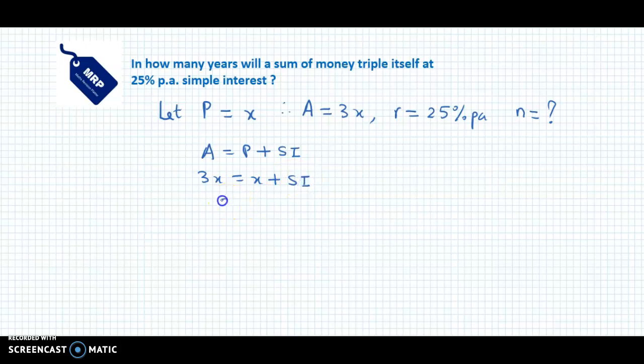So the simple interest is 2x. Now we use the formula for simple interest. We know that simple interest is calculated as P × n × r / 100.